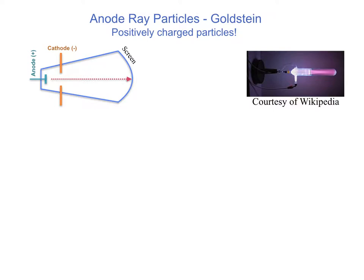These particles were initially observed by Goldstein, but it was Thomson who actually studied them and measured the charge-to-mass ratio, just as he had done for cathode rays. He designed the same experiment, with electrical plates placed above and below the beam — a negatively charged plate on top and a positively charged plate on the bottom. The rays are deflected upward toward the negatively charged plate through a distance d.